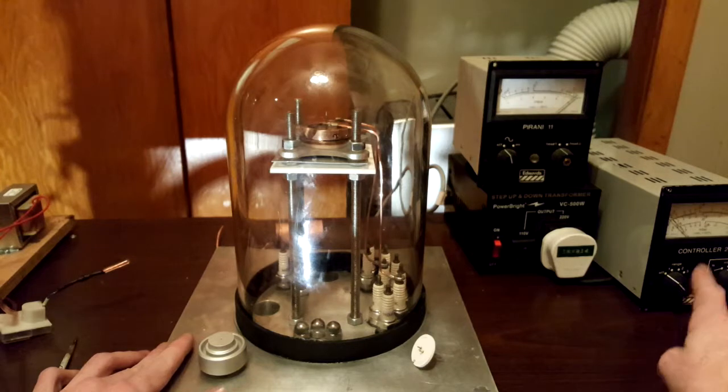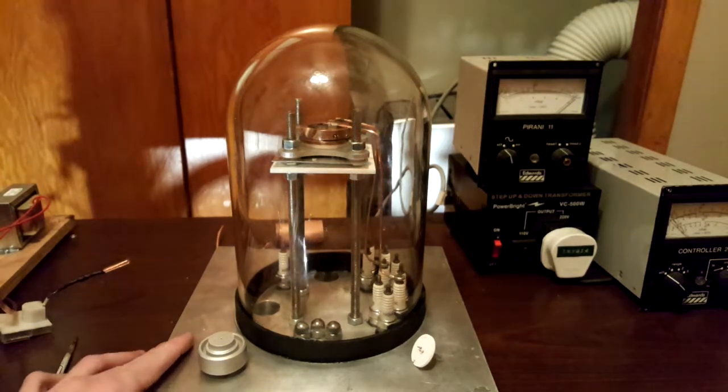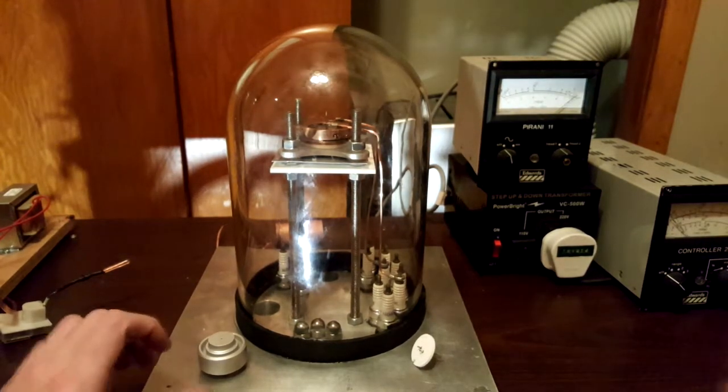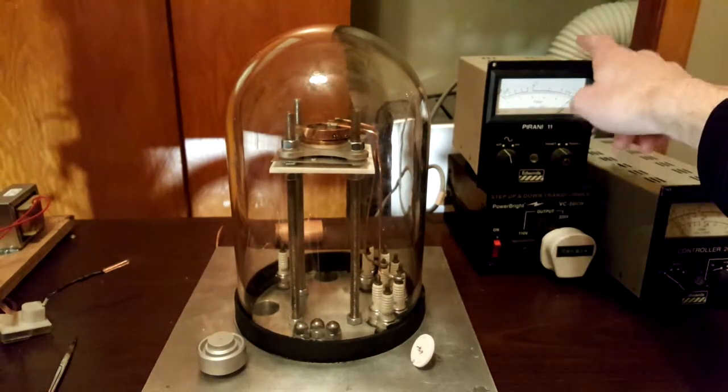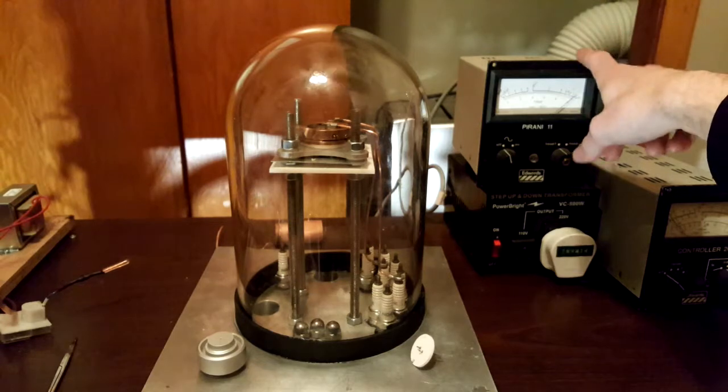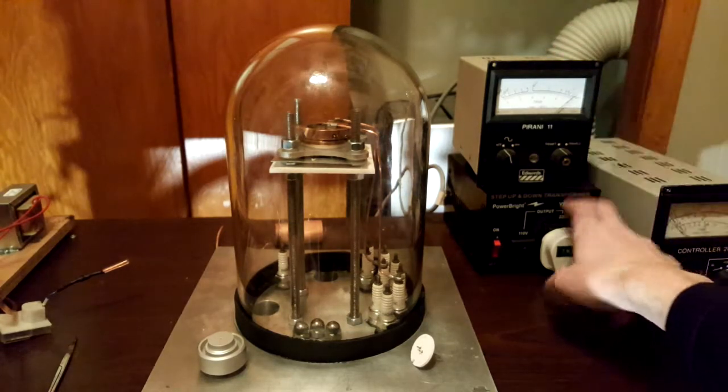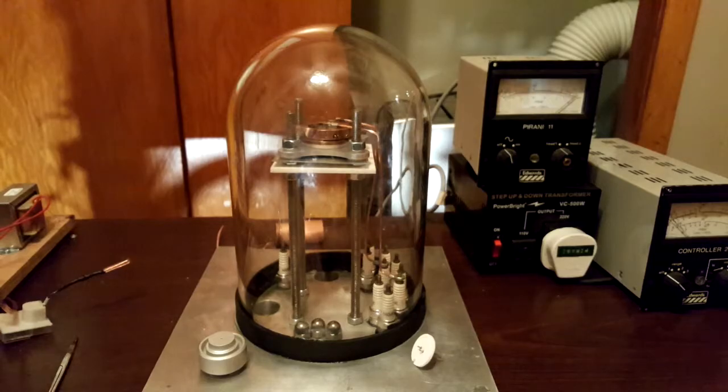Next to this here is my piranha gauge, and over here is my penning gauge controller. I don't have a penning gauge on here yet, but I'm trying to get the connection right. This works off a British plug, so I use a transformer here to get the voltage right.